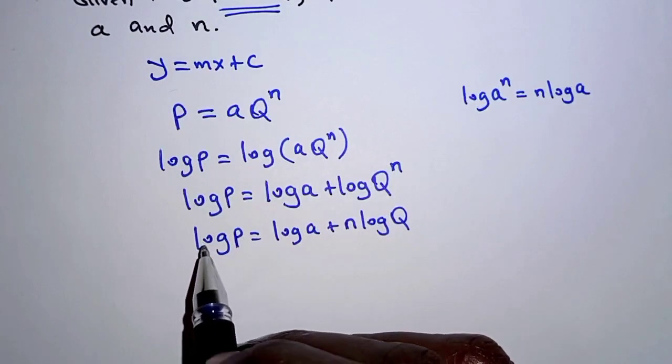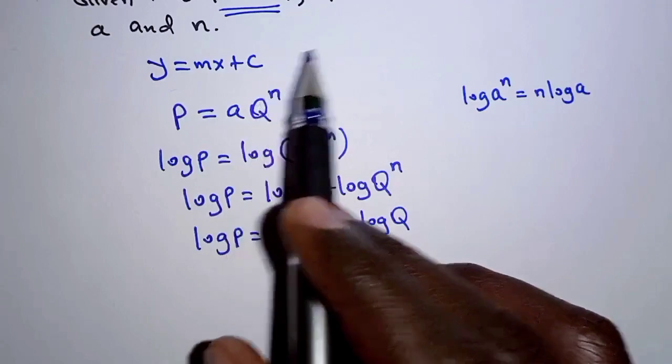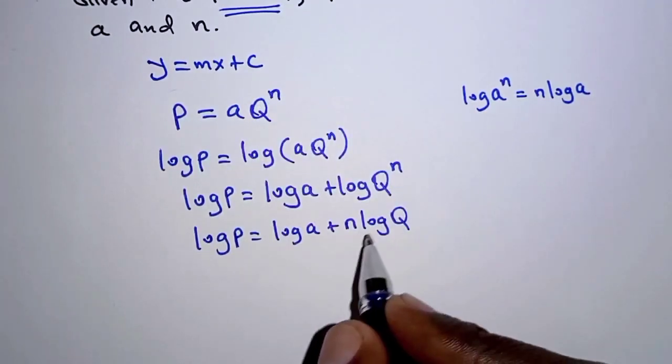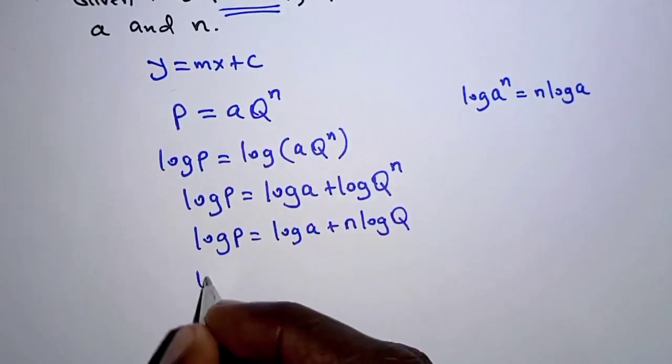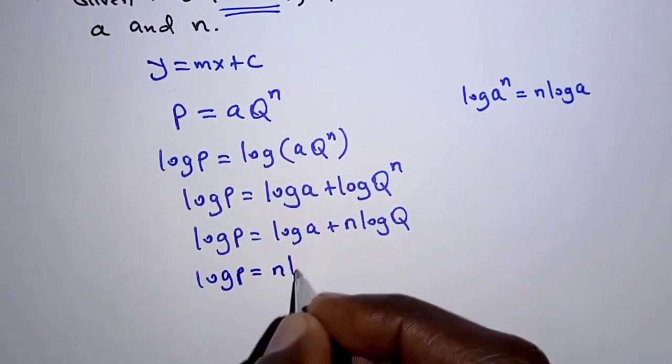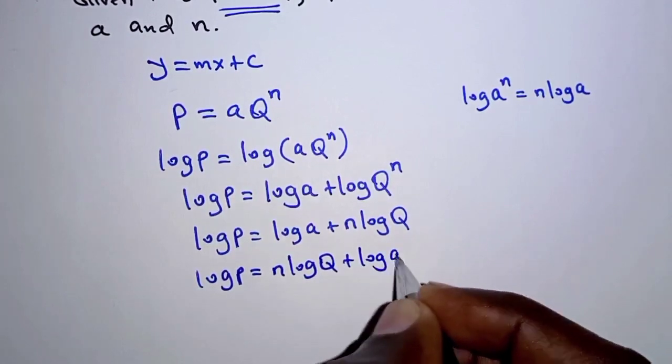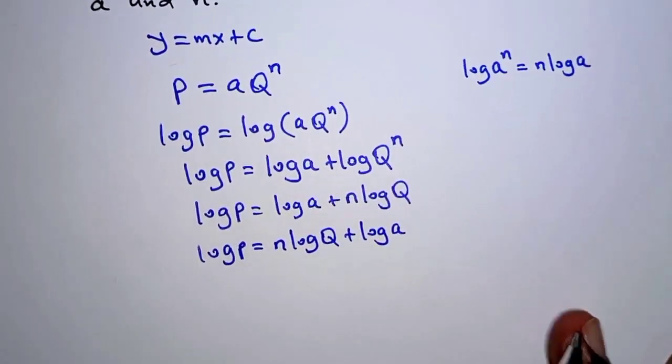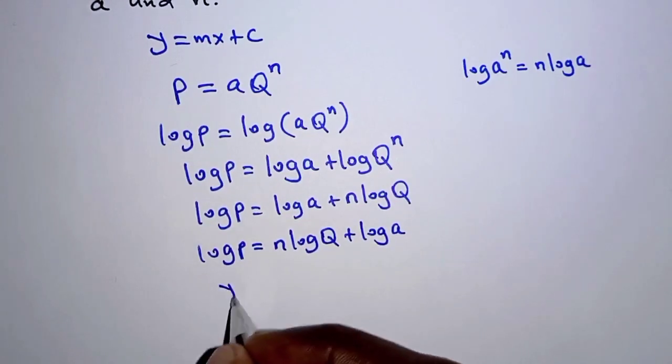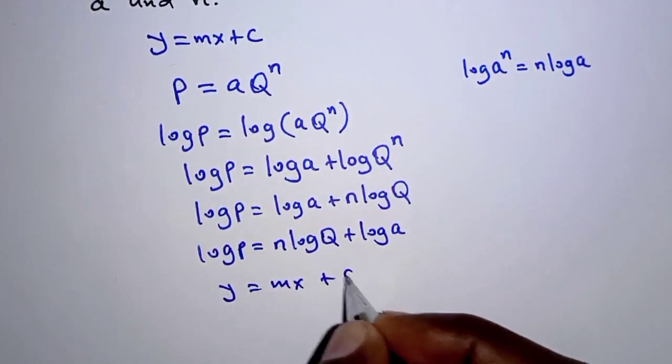So at this point we can say it's already in the form Y is equal to MX plus C. So maybe if I rearrange this, we'll have logarithm of P is equal to N log Q plus log A. Now if we relate it to Y is equal to MX plus C.